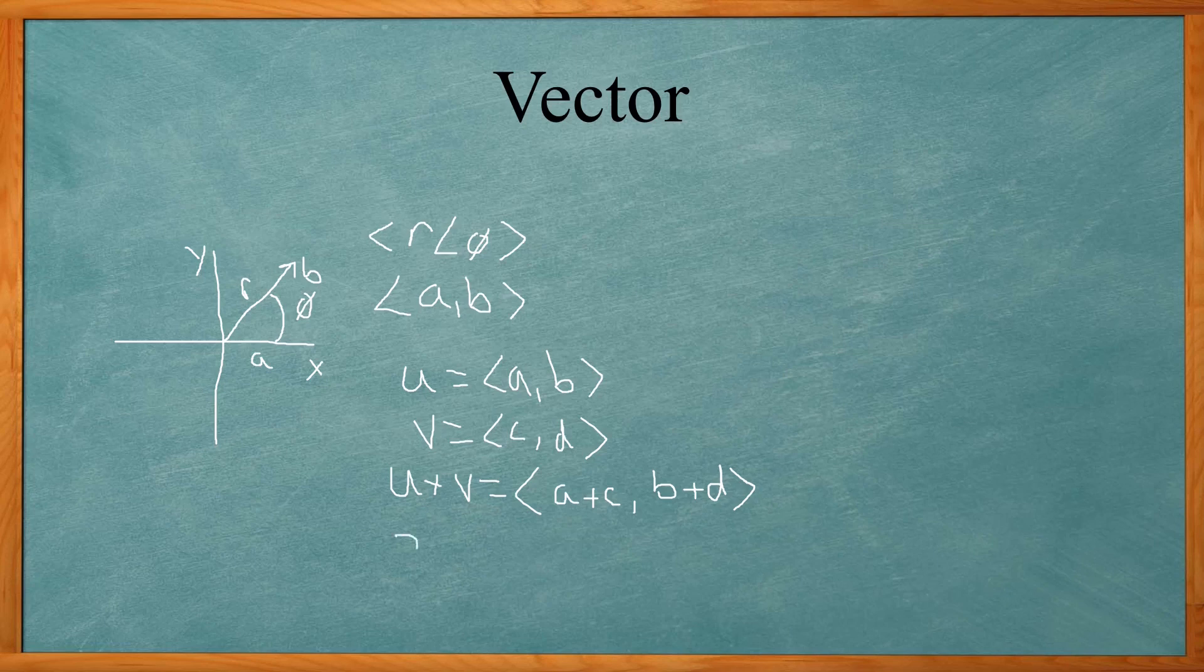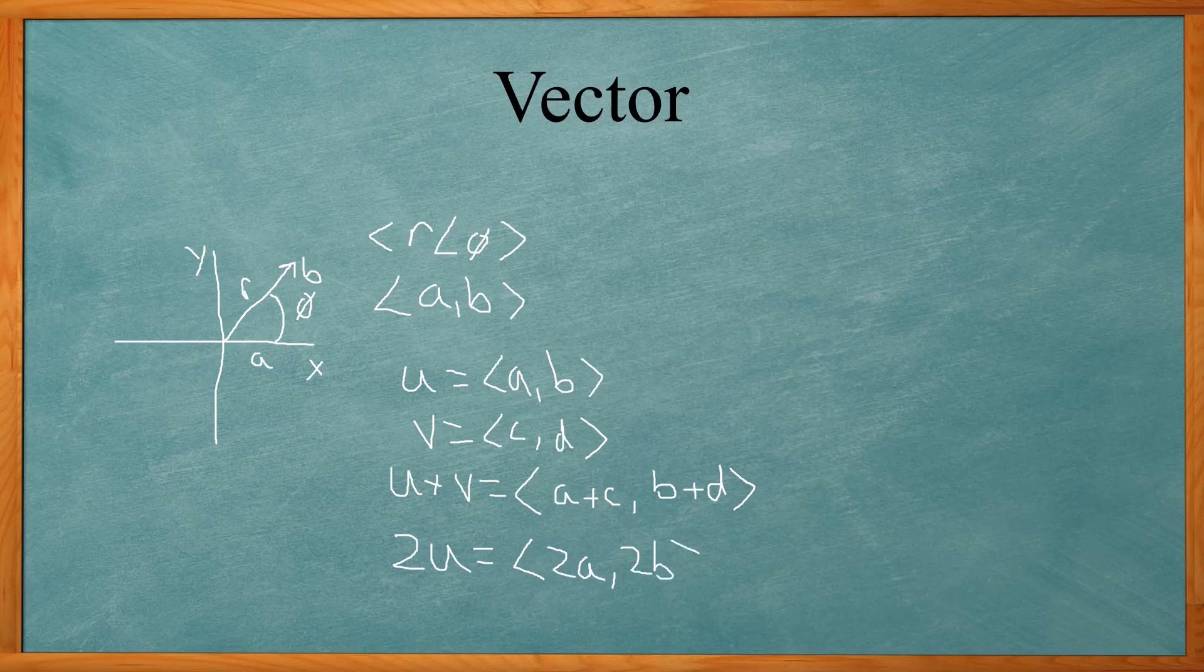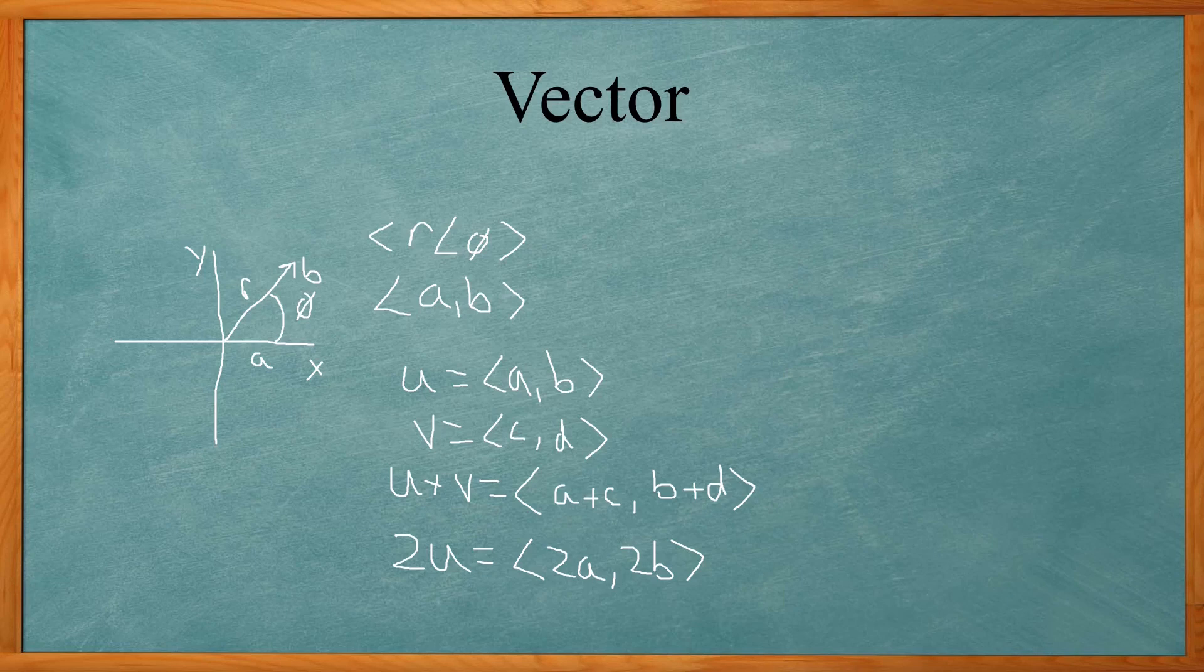And you can also multiply the vectors times some constant. If I multiply vector U by 2, it will end up giving me 2A and 2B. So these are the properties you need to know in order to solve the next problem coming up.